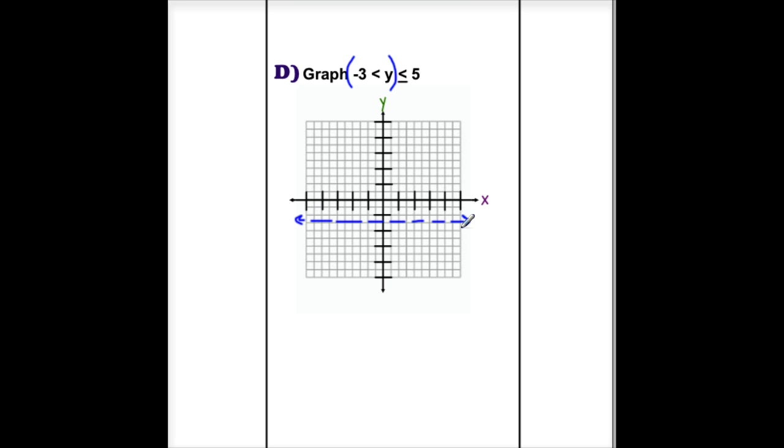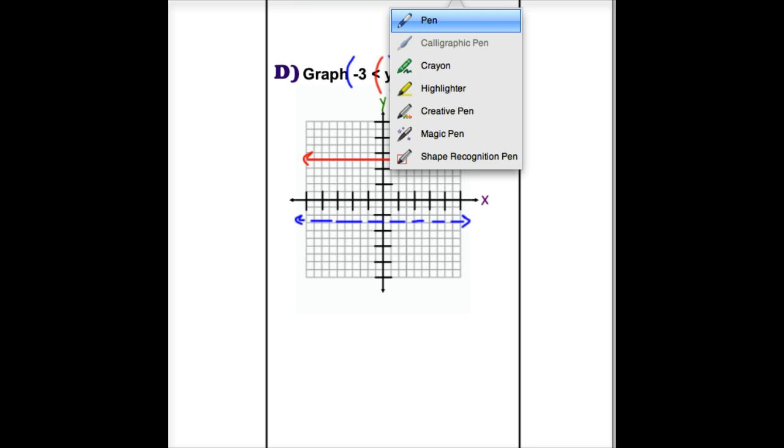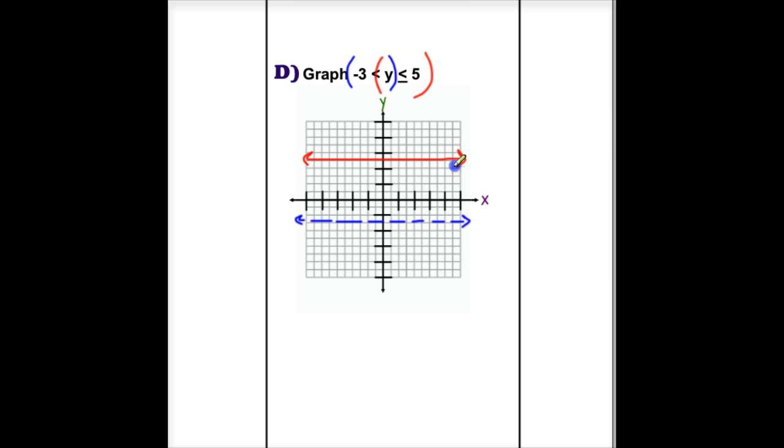And then we have y is less than or equal to 5. So this is going to be a solid horizontal line going through the y-axis at 5. So then when we go to shade, we are going to shade in-between because in-between is where our solutions lie.